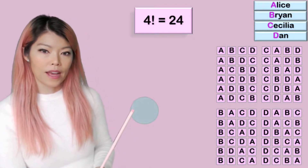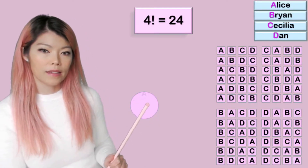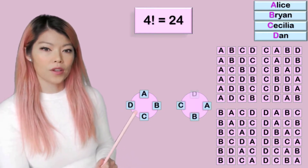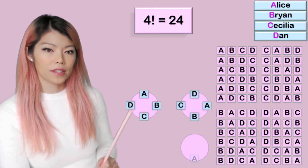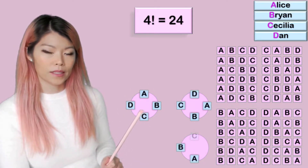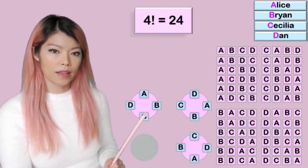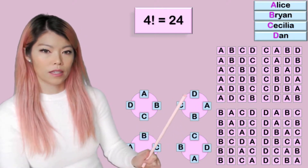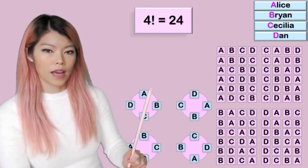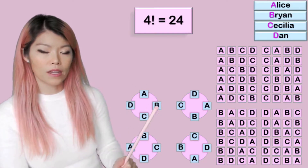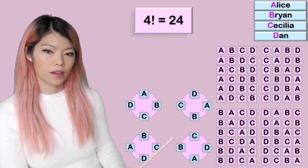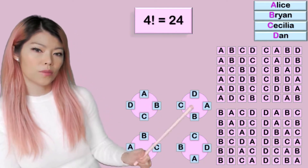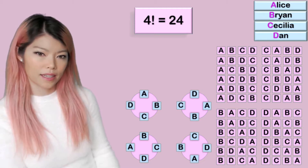Now, if I have A next to B next to C next to D, I notice that this arrangement is the same as if A sat over there next to B next to C next to D. And this arrangement would be repeated four times — these four arrangements are exactly the same.